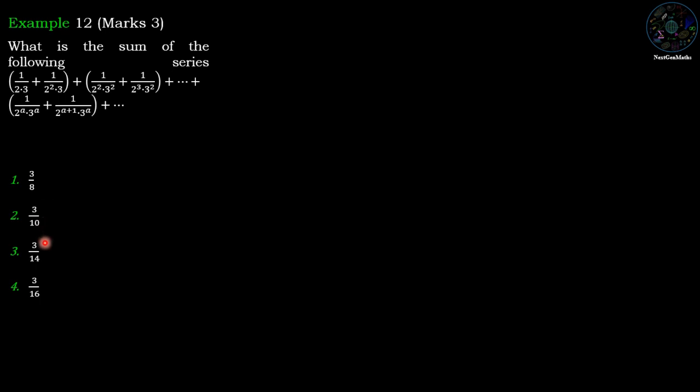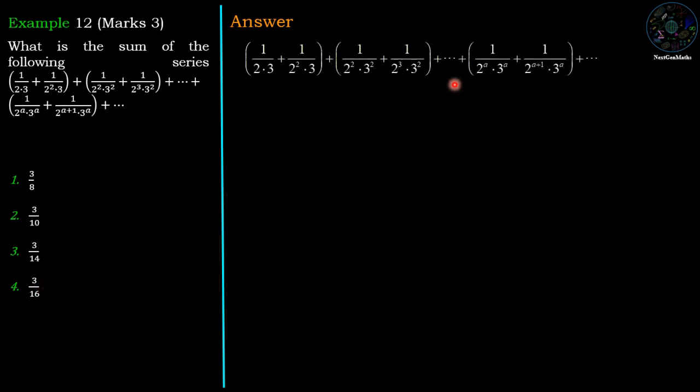The options are 3/8, 3/10, 3/14, and 3/16. Now this series can be separated into two brackets. The first bracket is the sum of the first term of every small bracket, which is 1/(2×3) plus 1/(2²×3²) plus 1/(2^n×3^n).